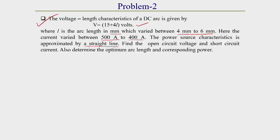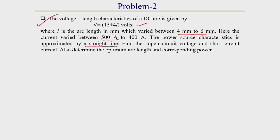The power source characteristics is approximated here by a straight line. We can also solve the problem with a curve-type approximation, but the solution will be a little bit more difficult. From this problem we can find out the open circuit voltage and short circuit current — what should be the open circuit voltage and short circuit current of the power source for the given welding requirements.